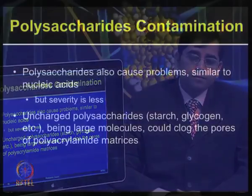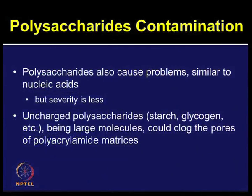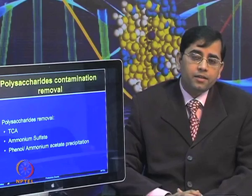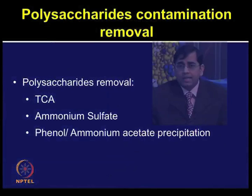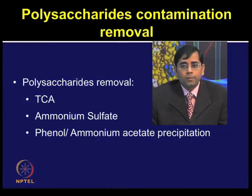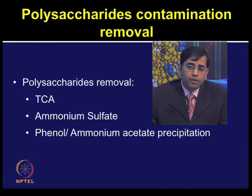Polysaccharide contamination, similar to nucleic acids, may also cause problems, although the severity is less. Uncharged polysaccharides such as starch and glycogen are very large molecules and can clog the pores of gel matrices. However, during the precipitation step itself, a lot of polysaccharides get removed. TCA, ammonium sulphate, phenol, or ammonium acetate precipitation are efficient ways of removing polysaccharide contamination.